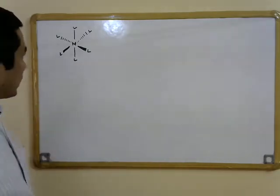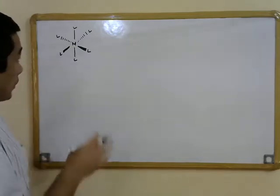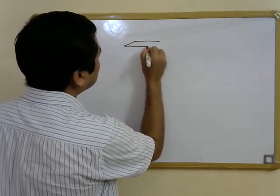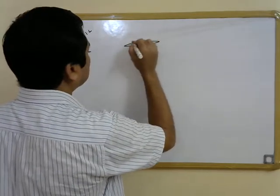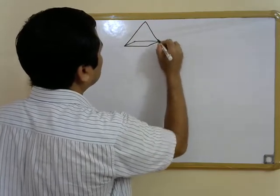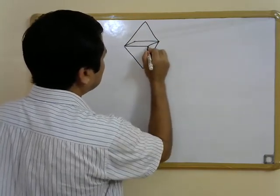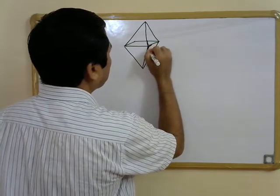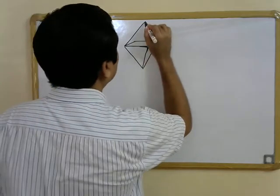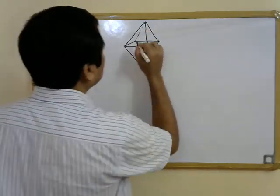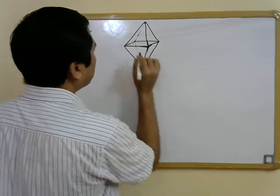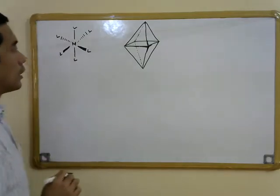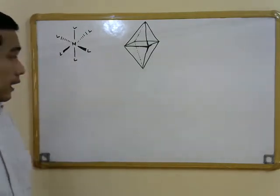This is one way of drawing the octahedron, and it is easy to visualize certain symmetry operations when we draw it in this way. Another way is the polyhedral structure where the triangular faces of the octahedron are visible. There are total eight triangular faces in an octahedron — that's why we call it an octahedron. We can give a 3D appearance by drawing it so that one edge is towards us while a particular corner is behind us.